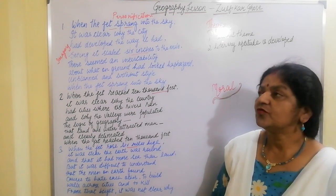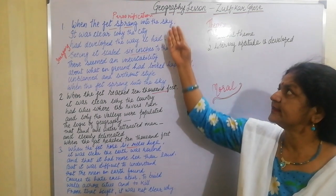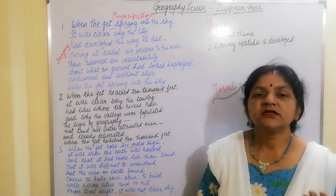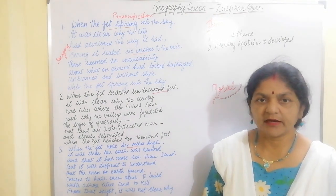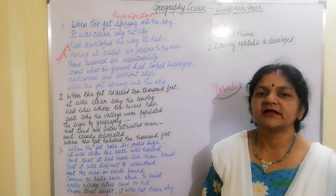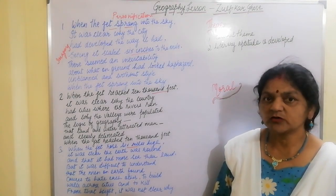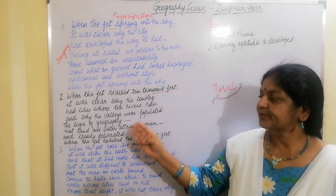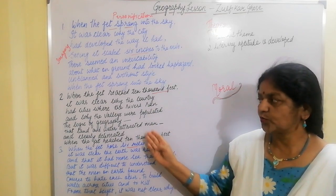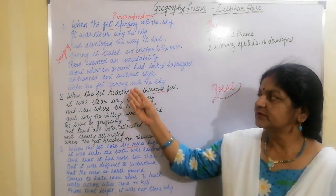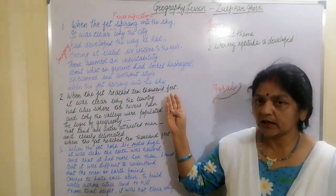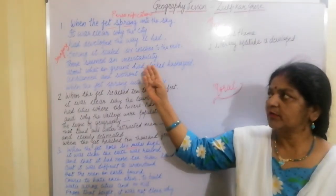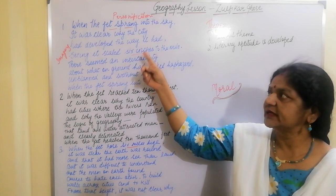So here I begin. First of all, I will discuss the title of the poem, Geography Lesson. Geography Lesson is a poem composed by Zulfika Ghosh, which is about the way the earth looks from different altitudes. This poem is divided into three stanzas where the poet has used the image of a jet plane to portray a very clear representation of earth.